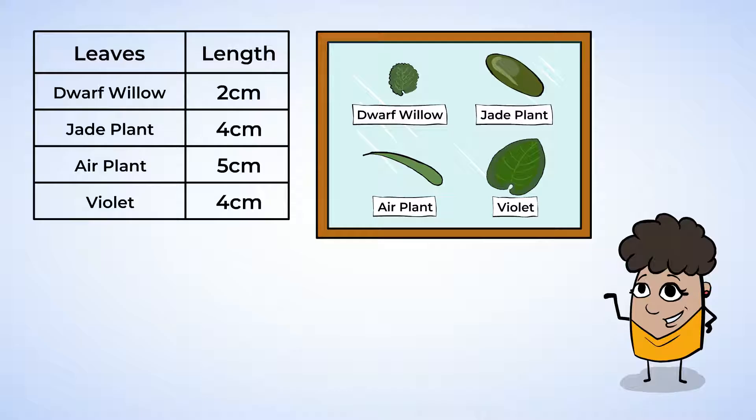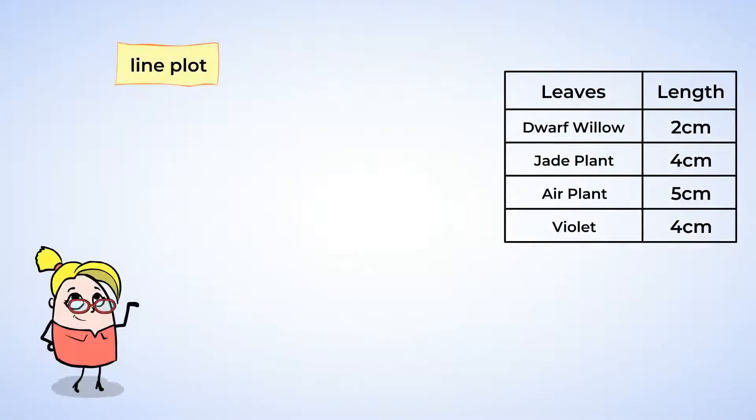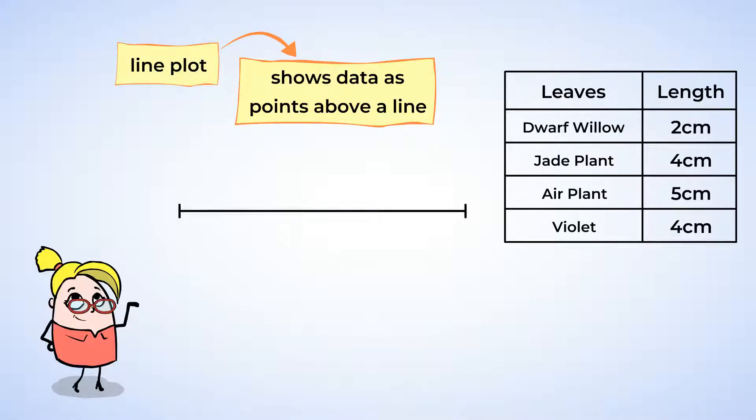Let's make a line plot with the data you collected. A line plot shows data as points above a line. To make it, first you start with a number line. Find the smallest number in your data set. In this case it is two centimeters. Then find the largest number in your data set. Here it is five centimeters. We need to make a number line from two to five. Draw a straight line and make four equally spaced marks on the line. Label them two, three, four, and five.